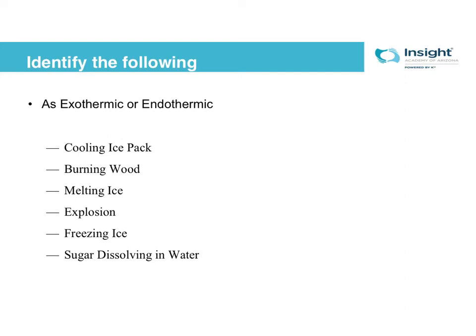Here's a big practice item. A lot of times you'll think about these in terms of what you feel happening, then remember that's the opposite of what's going on in the system. Also try thinking from the point of view of the molecules. Pause the video and try to get these right, coming up with reasoning for each. An ice pack: it starts at room temperature, you crush it and it gets cool. The surroundings get cool, which means the chemicals inside the bag got hot — so that's endothermic, the system is gaining energy. Burning wood: near a fire it feels warm, so the surroundings are gaining heat, which means the system is giving off heat — that's exothermic.